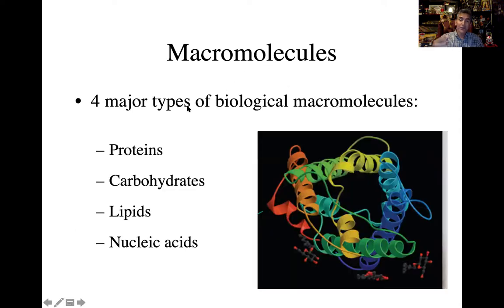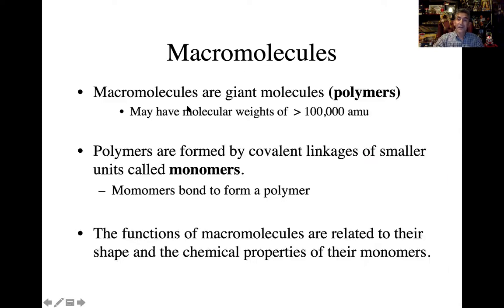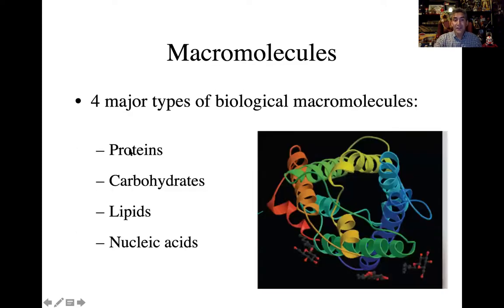All of these proteins, carbs, lipids, nucleic acids are a type of polymer. Why are they polymers? Because they're made up of individual little monomers. Each one, each category, is going to have a different array of monomers proteins that are connected together. And we'll kind of get to that with each chapter that we progress to.